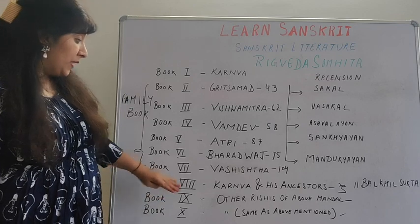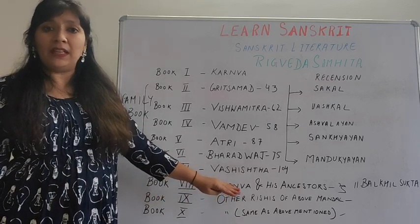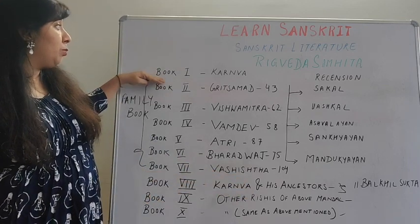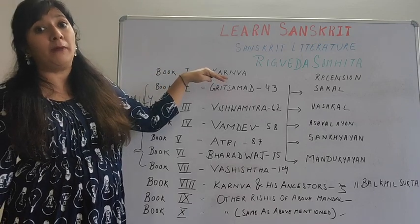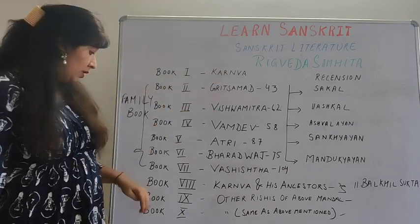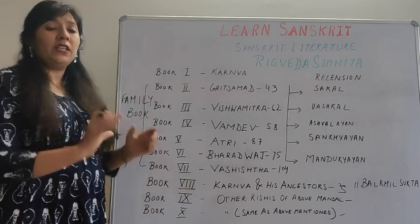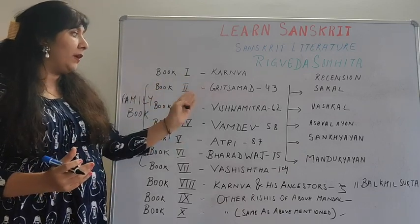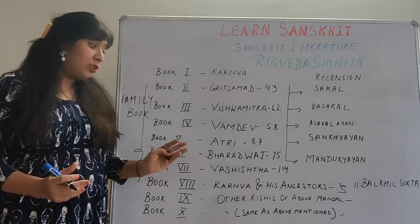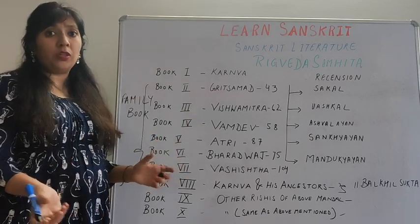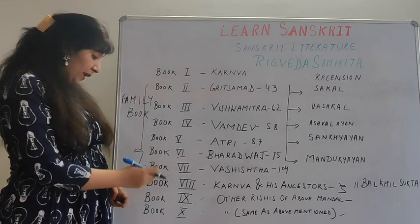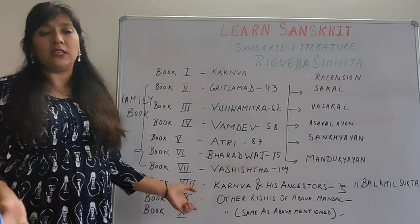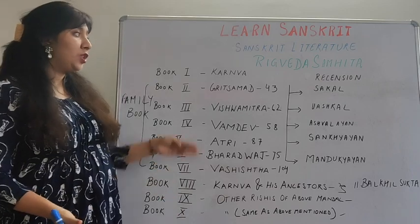Book eight is by Kanva rishi and his ancestors. Likewise, book one is also said to have been contributed to by Kanva and his ancestors. Book eight also has mixed content composed by different rishis of other mandalas like Kritsamad, Vishwamitra, Vamadeva, Atri, Bharadwaj, Vashisht, and Kanva. These all contributed some suktas and verses. Book nine and book ten also have mixed content developed by all the rishis of the above mandalas.